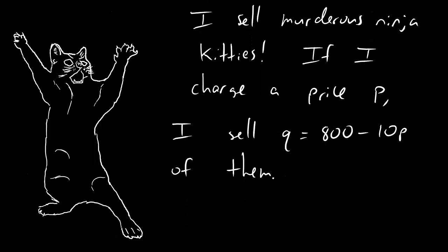Perhaps I sell murderous ninja kitties, and I happen to charge some random price p. I don't know what it is, but whatever that price is, I can use that price to determine the quantity of ninja kitties that I sell. So p is the price and q is the quantity.